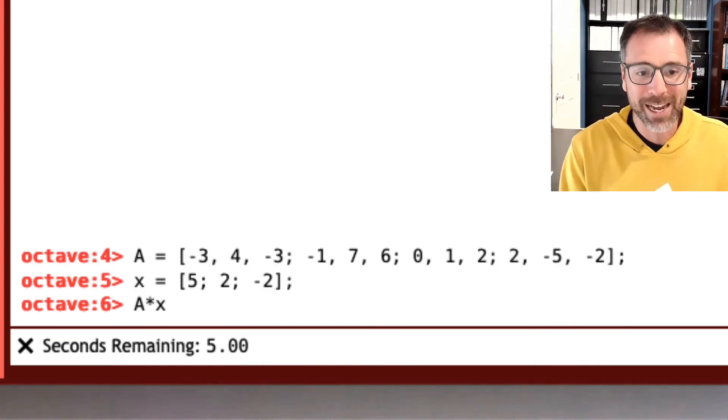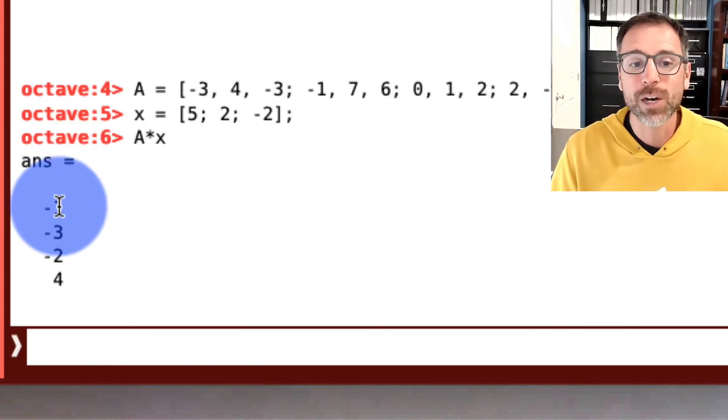We'll now save the column vector x as 5 semicolon 2 semicolon negative 2. And I'll push enter. Remember, A times x is the vector that we want. Here we see it's negative 1, negative 3, negative 2, 4.